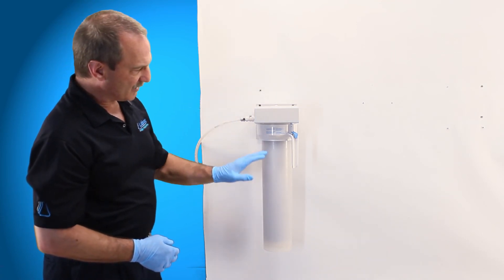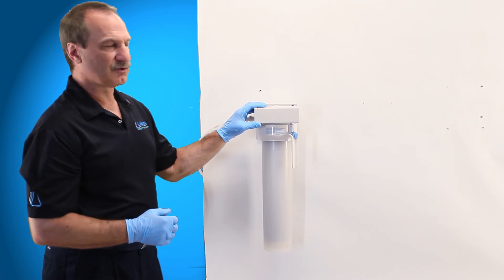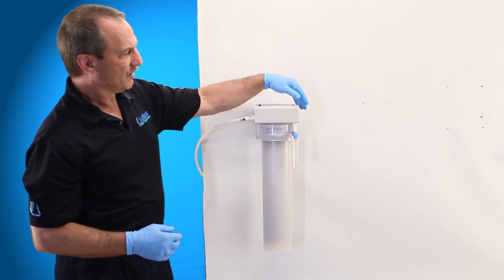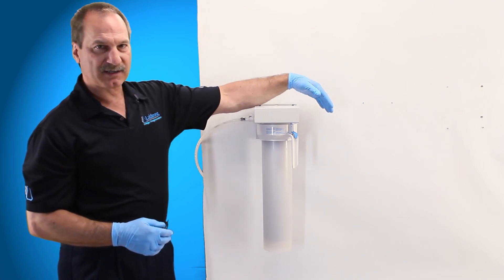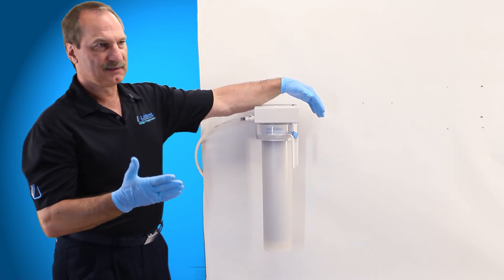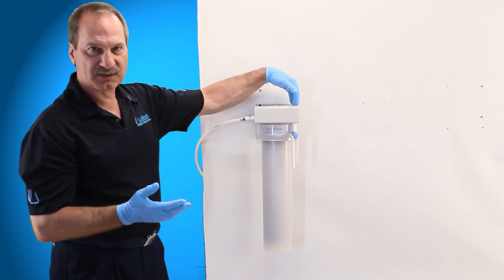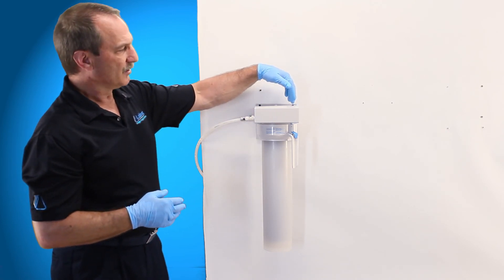Once all the air is out of the system and you've rinsed about five liters to drain, now you can go ahead and shut this off, shut your inlet off, connect this to whatever product it's going to, like a DI system for pre-treat, could be going to a distillation system for pre-treat.